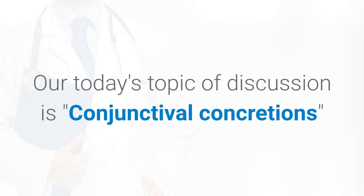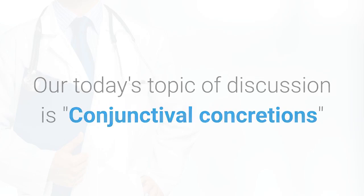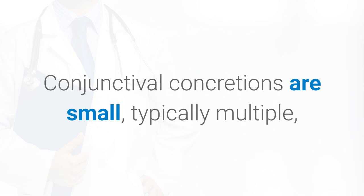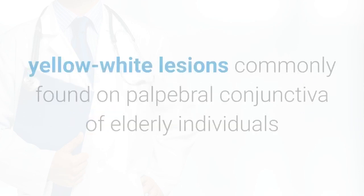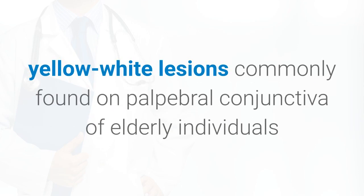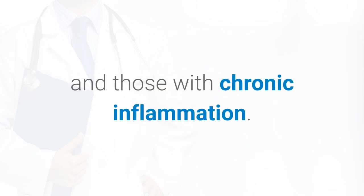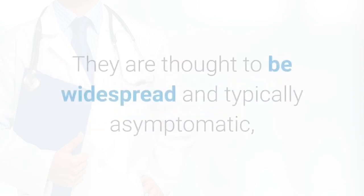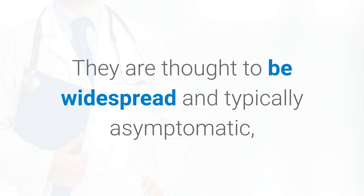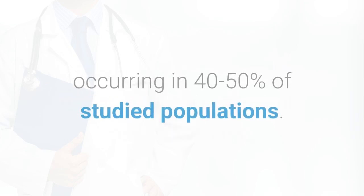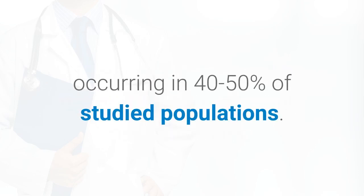Our today's topic of discussion is conjunctival concretions. Conjunctival concretions are small, typically multiple, yellow-white lesions commonly found on palpebral conjunctiva of elderly individuals and those with chronic inflammation. They are thought to be widespread and typically asymptomatic, occurring in 40-50% of studied populations.